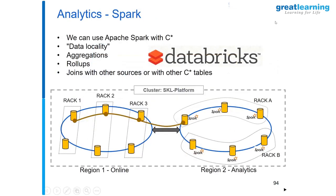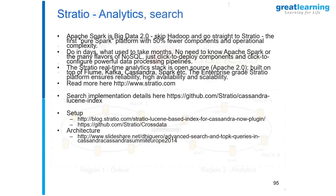This is Databricks — we have been talking about this. Remember we were saying that you split 50-50? You have Cassandra and Spark co-located. You get that here. Databricks is the company, something that we have already been talking about.